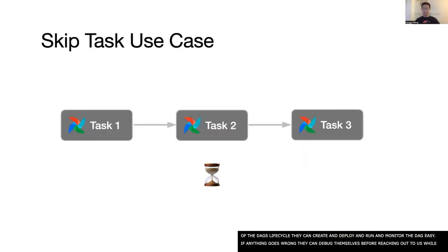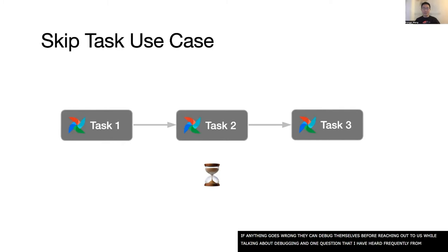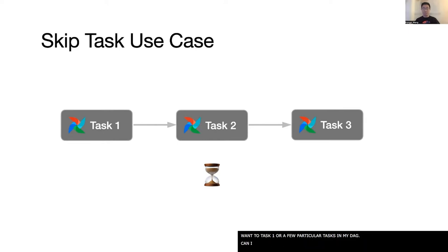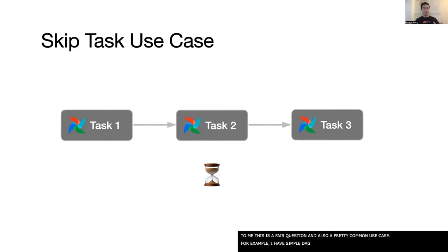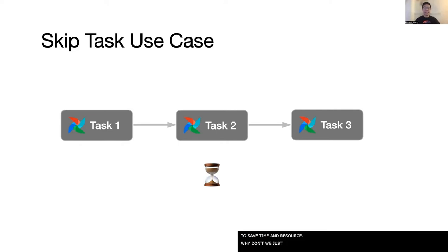While we're talking about debugging, one question I've heard frequently from our users is: I want to test one or a few particular tasks in my DAG. Can I trigger a DAG run with just those tasks? To me, this is a fair question and also a pretty common use case. For example, I have this simple DAG with three tasks — suppose I don't care about task queue; to save time and resource, why don't we just skip it like this?